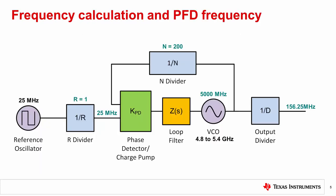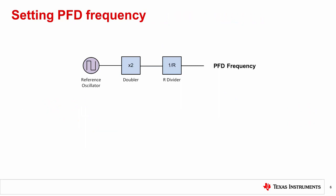Going back to the previous example, let's think about how to set the R divider and phase detector frequency. In this example, with R divider set to 1, the PLL can work in integer mode, so the decision is easy to make. But what if the reference frequency is 24 MHz instead? Should we still maximize the phase detector frequency, or should we set it to 8 MHz so that the PLL can work in integer mode? Let's take a look.